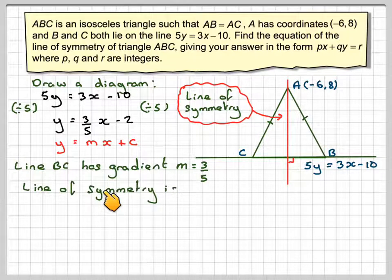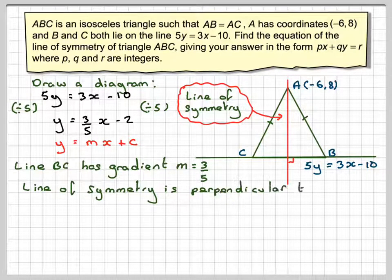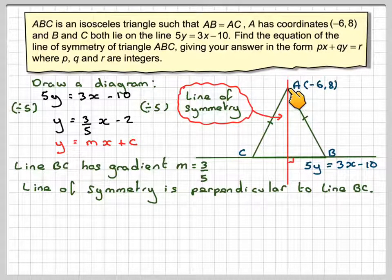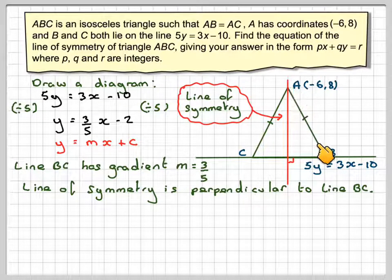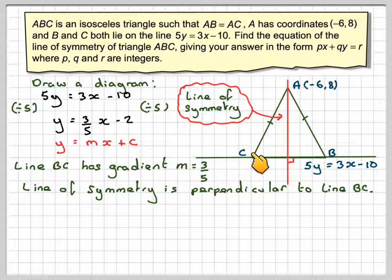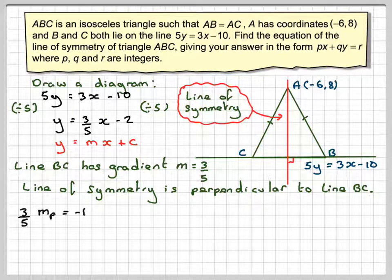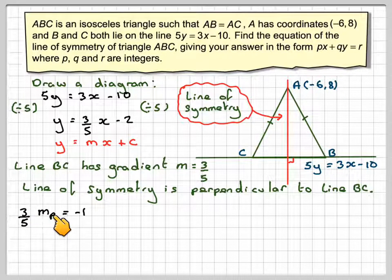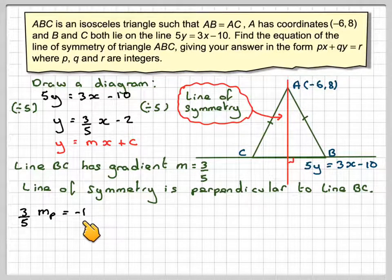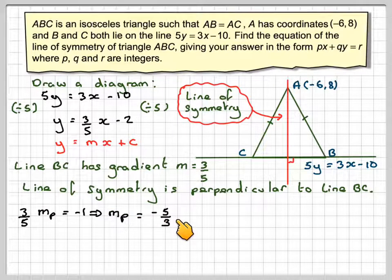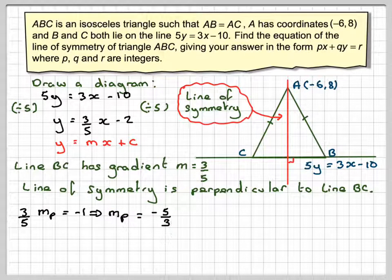The line of symmetry is perpendicular to BC. The rule for perpendicular lines for gradients is that (3/5) times the perpendicular gradient, which is the gradient of this line, will equal -1, which means that the perpendicular gradient is going to be -5/3.